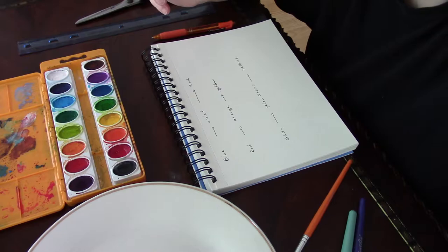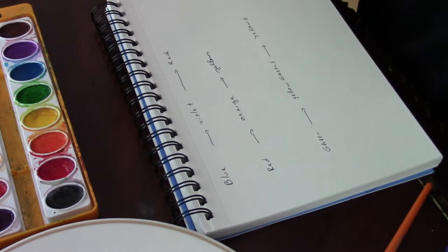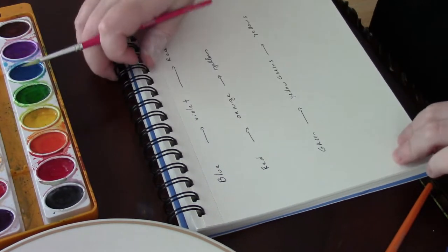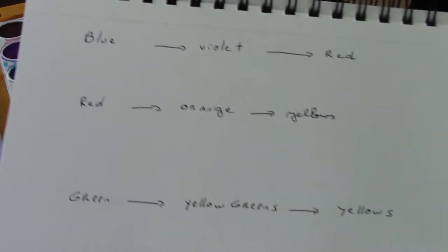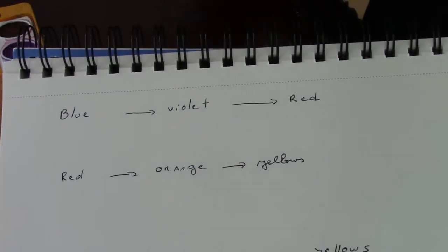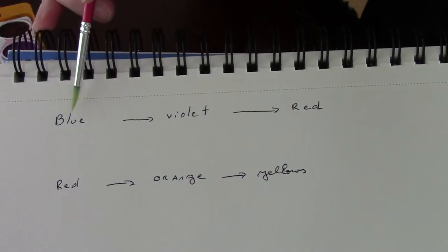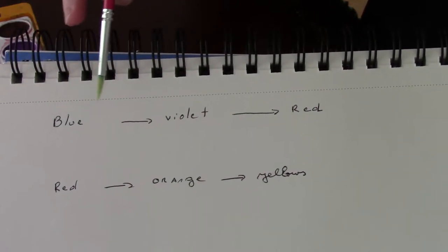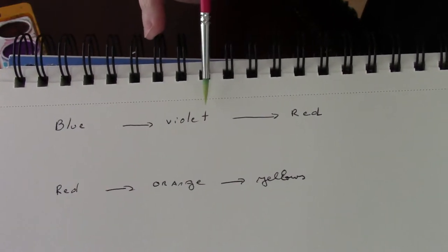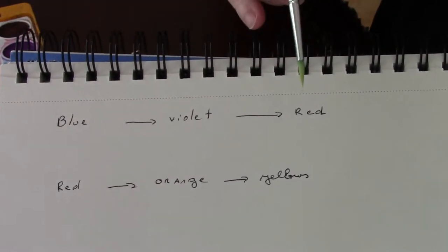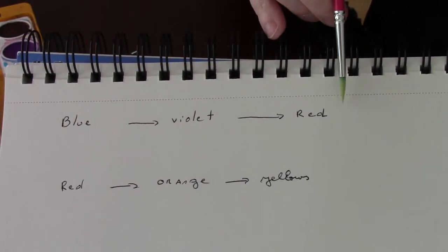I'm going to bring this a little bit closer and show you some of the ranges that work. So we have blue and if we add red we have violet and we can get a gradient all the way to a true red.